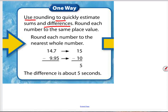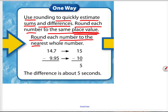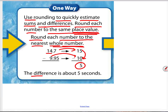Use rounding to quickly estimate sums and differences. Round each number to the same place value — in this case, to the nearest whole number. So they round 14.7 to 15 and 9.95 up to 10. They just deal with whole numbers and subtract, finding a difference of 5. So the difference is about 5 seconds. This is one way of rounding, but rounding can be done several different ways depending on how you're looking at the problem.